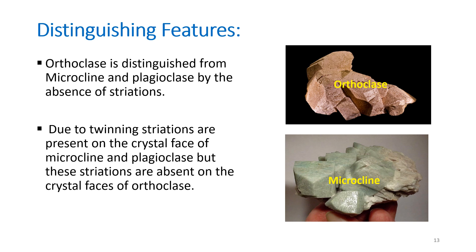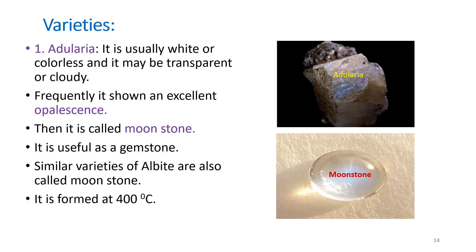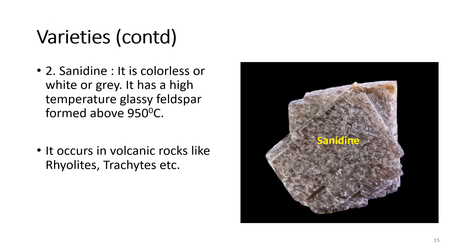Varieties of orthoclase feldspars: adularia is usually white or colorless, may be transparent or sometimes cloudy, and frequently shows an excellent opalescence — when it shows opalescence it is called moonstone, which is used as a gemstone. Similar varieties of albite are also called moonstone; adularia is formed at around 400°C. Sanidine is colorless, white, or gray — a high-temperature glassy feldspar formed above 950°C, occurring in volcanic rocks like rhyolites and trachytes.